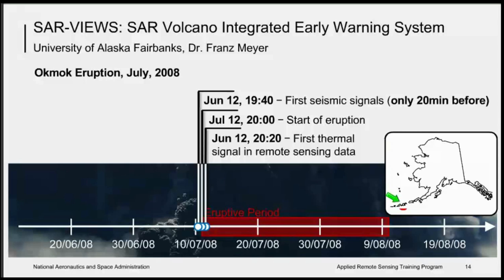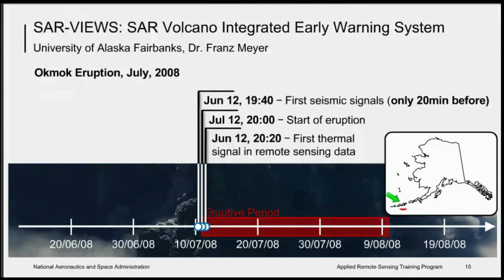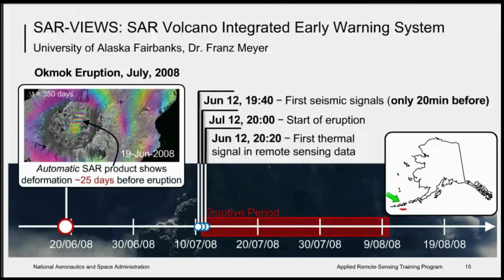However, just before the eruption — only 20 minutes before — seismic signals were measured that indicated the oncoming eruption. In analysis of the SAR data, 25 days prior to the eruption, some deformation was seen on the flanks of the mountain. This is a case study using historic data. However, the SAR Views system at the University of Alaska in Fairbanks is being developed to follow just these sorts of signals in advance of eruptions. For certain locations and conditions, SAR data is freely available, and in the future NASA will be launching the NISAR mission, which will provide global, freely available SAR data.